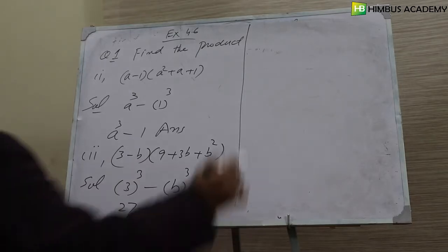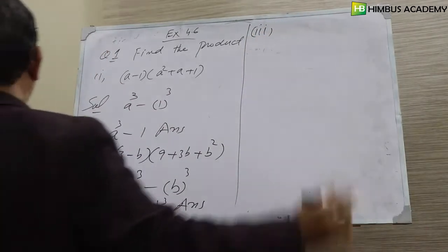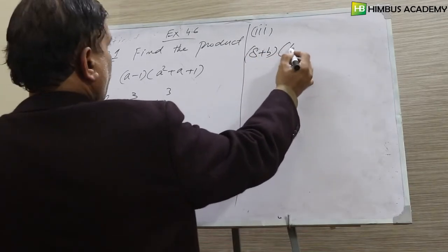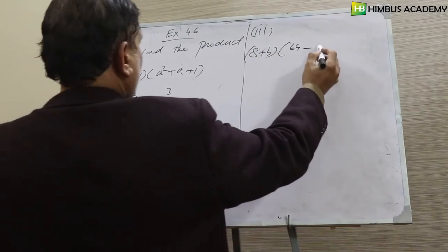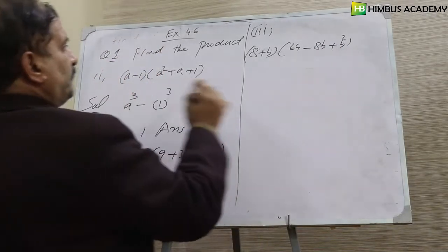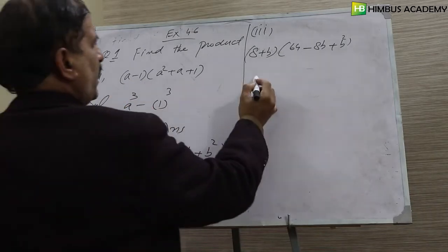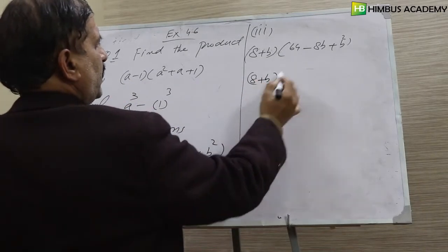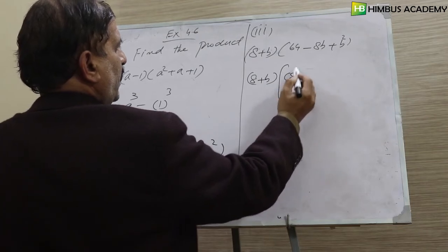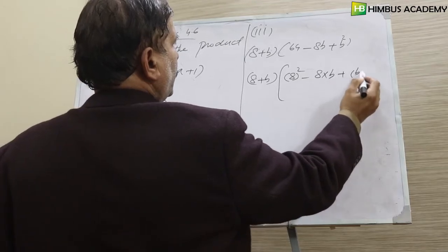Number three: 8 plus B, and this is 64 minus 8B plus B square. We can increase one step. This is like A plus B, A square. This 8 is squared. A square minus AB plus B square, according to the formula.